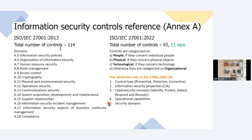Now in 27001:2022, the domains are called controls and there are total four controls. The controls are categorized as people control, physical control, technological controls and organization control. Under these four controls there are total 93 controls, and further five attributes have been added. The attributes include control type — now the control type tells whether the control is preventive in nature, detective in nature or corrective in nature — and information security properties: confidentiality, integrity and availability.